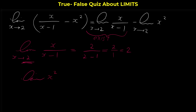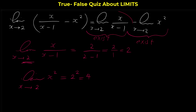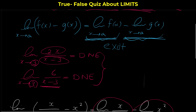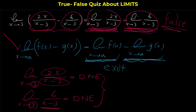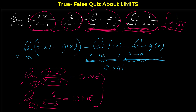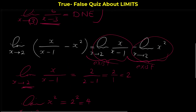The limit of x² as x approaches 2 is 2² = 4, so the second limit also exists. Because both of these limits exist, based on the rule we have for limits in general, this statement is true.